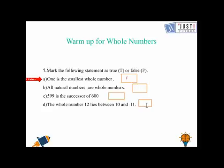All natural numbers are whole numbers. The statement is true because whole number starts from zero, then one, two, three, so it covers all the whole numbers.